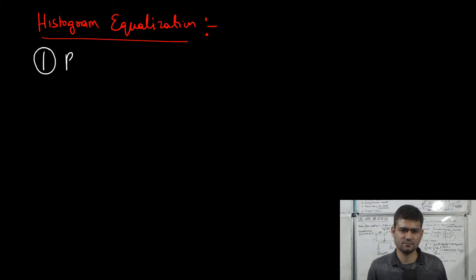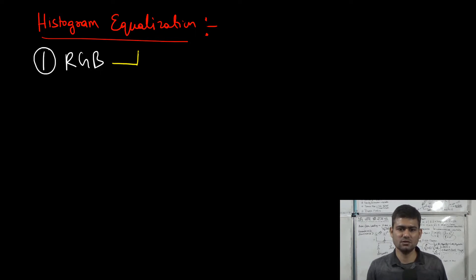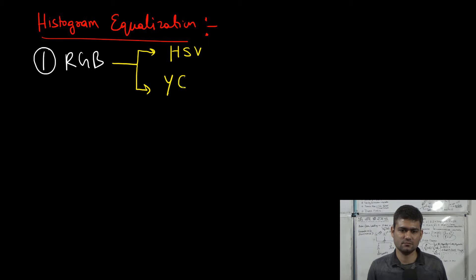One approach is to convert our regular RGB color image into a color space that allows the separation of the intensity component. Two such color spaces are HSV and YCbCr. In HSV, the V channel is the intensity component.